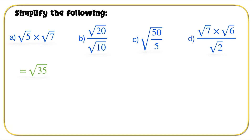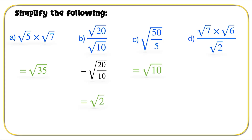Part B: we can write this as root of 20 over 10, so we end up getting the square root of 2. Part C says the square root of 50 over 5 — we already have it under one square root sign, so all we need to do is simplify that fraction to make square root of 10.